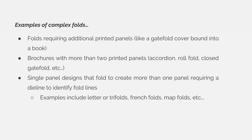Examples of complex folds include folds requiring additional printed panels like gatefold covers bound into a book, brochures with more than two printed panels that could be accordion, roll fold, closed gate fold, etc. Also included are single panel designs that fold to create more than one panel, requiring a die line to identify where the item folds. Examples include letter or tri folds, French folds, and map folds.